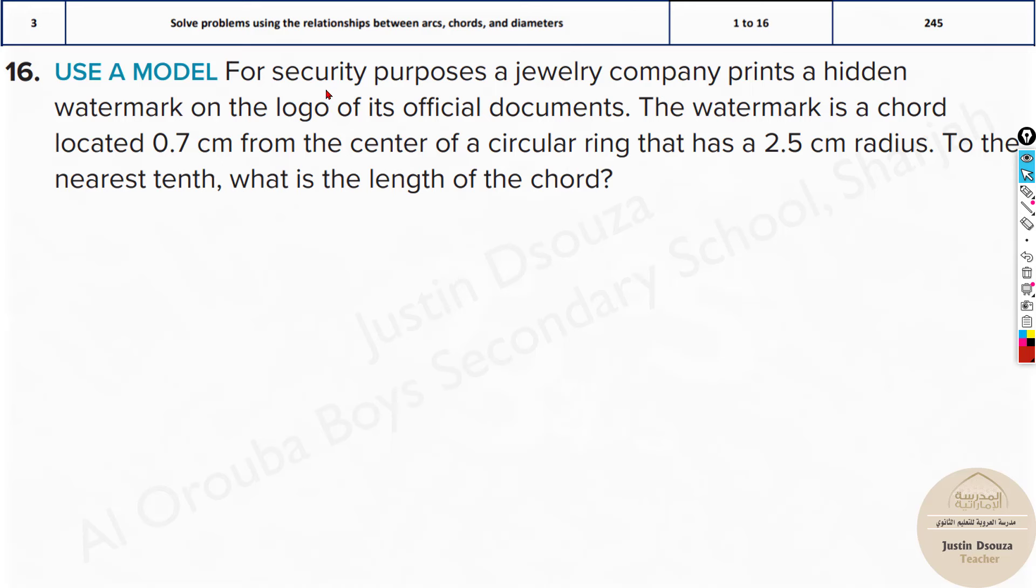And here we have a real situation problem. For security purposes, a jewelry company prints a hidden watermark on the logo of its official documents. The watermark is a chord located 0.7 cm away from the center of the circular ring. So now let's just draw a circular ring and imagine this is the center. 0.7 cm, 0.7 away is a chord. This circular ring has a radius, the radius over here from the center to this R is 2.5. To the nearest tenth, what is the length of the chord? Now we need to find the length of this chord. But first we need to find at least half this distance and then we can find the full.